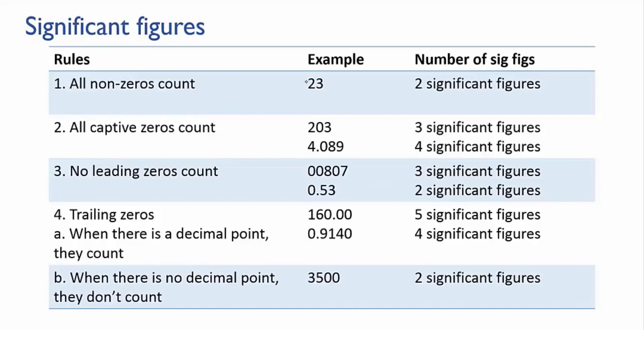First rule: all non-zero digits are significant. In the number 23, you have two non-zero digits, 2 and 3. Clearly, both of those digits have been measured, so this number has two significant figures.